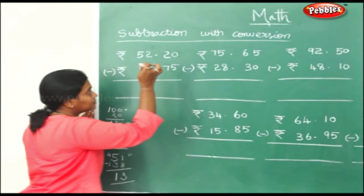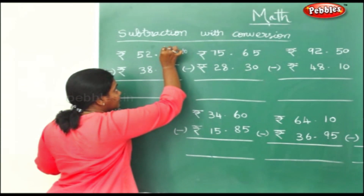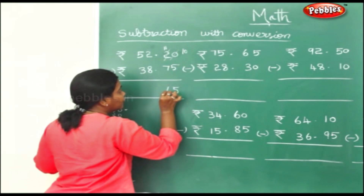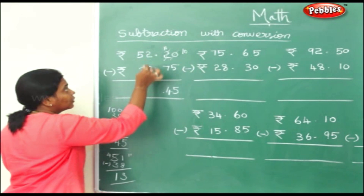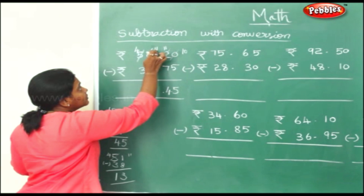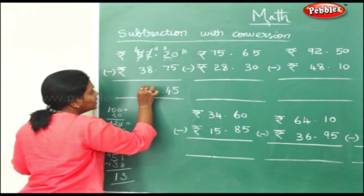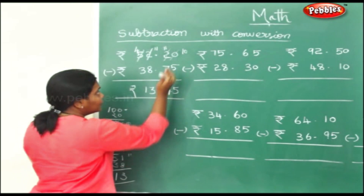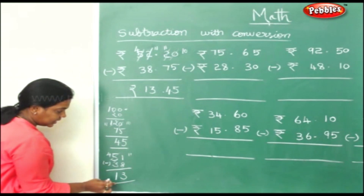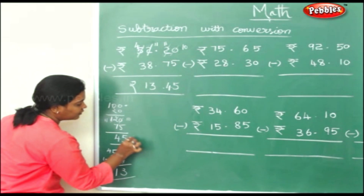Now doing normal subtraction: 0, you cannot minus it by 5, so this becomes 10, this becomes 11. 10 minus 5 is 5, 11 minus 7 will be 4. 2 again you cannot do it, so this becomes 11, this becomes 4. 11 minus 8 will be 3, 4 minus 3 will be 1. So rupees 13 and 45 — if you subtract it here also, converting and subtracting, you'll get the same answer: rupees 13 and 45 paise.